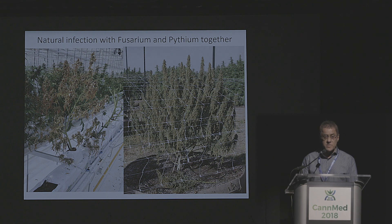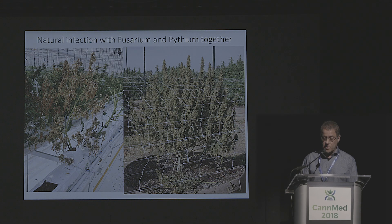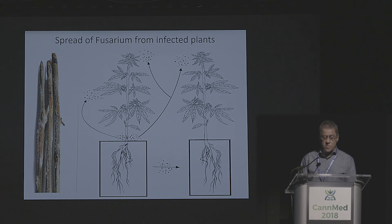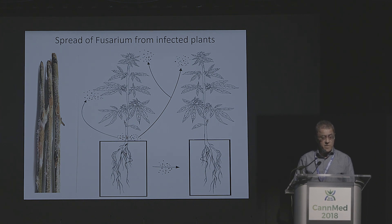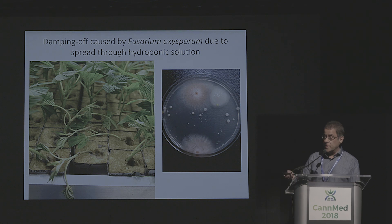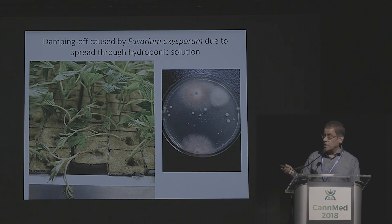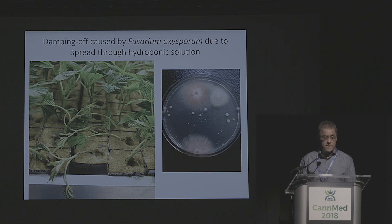In some cases, you encounter Fusarium and Pythium together, and the results can be lethal — those plants collapse whether in the greenhouse or in the field. A photograph from northern California shows plants that completely collapsed within two or three days under extreme heat, with roots completely gone. One concern with Fusarium is that spores can spread from infected areas up onto foliage or flowers, and also move sideways onto adjacent plants — particularly easy in a hydroponic system. We saw cuttings being rooted damp off from Fusarium moving through the hydroponic nutrient solution, and colonies of Fusarium came out from the hydroponic solution itself.